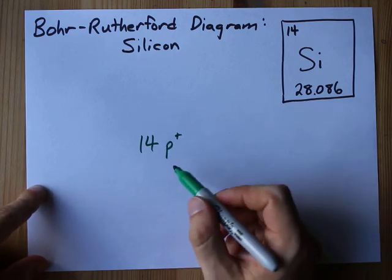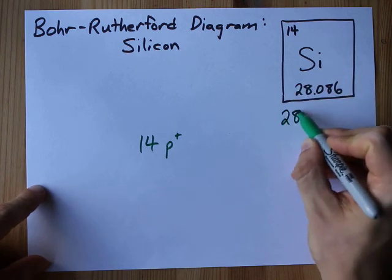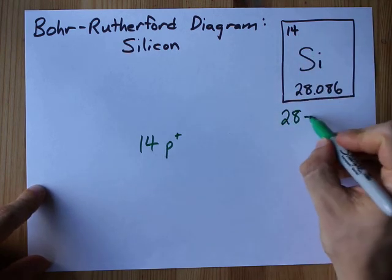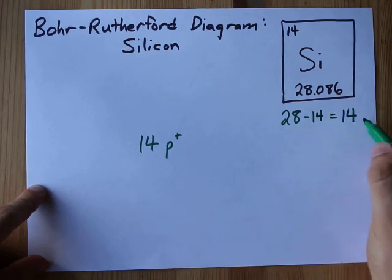The number of neutrons is the mass. Now you're gonna round this to the nearest whole number, that's 28, and subtract the number of protons. In this case I get 14 for neutrons.